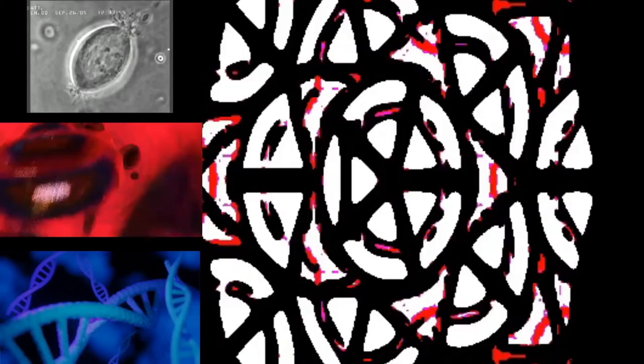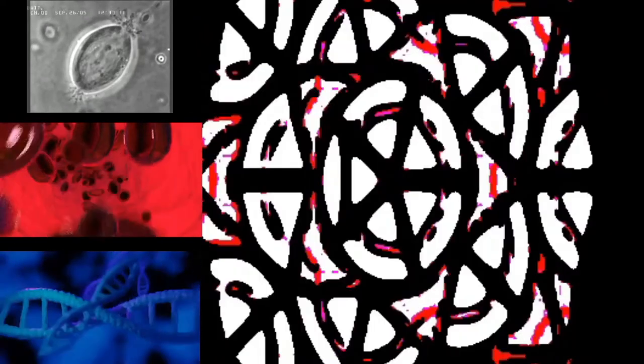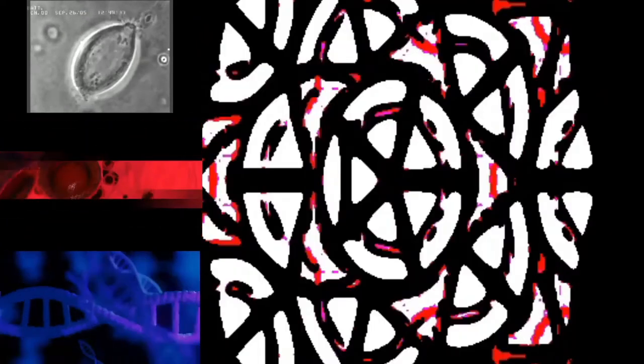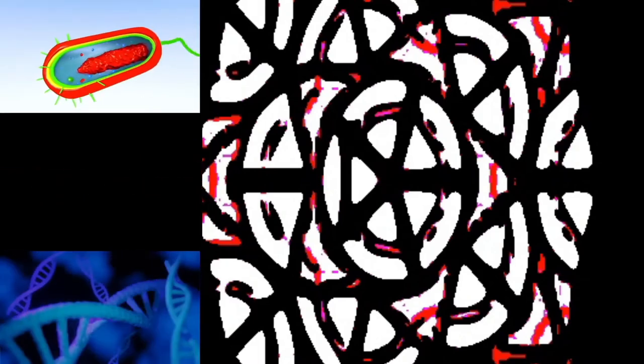Spiral bacteria: some rods twist into spiral shapes and are called spirilla, singular spirillum. Vibrio: comma-shaped. The archaeon Haloquadratum has flat square-shaped cells.